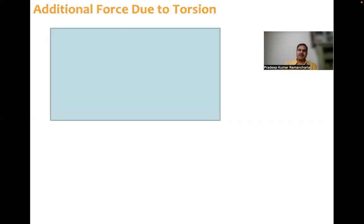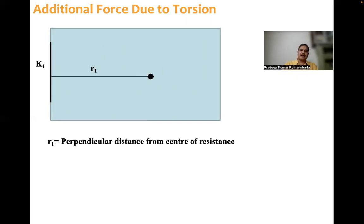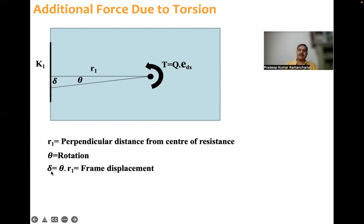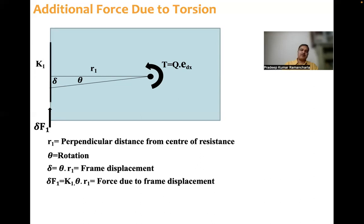Consider the floor plan — take one typical frame with stiffness k1 at a radius r1 from the center of resistance where the torsion acts in the anticlockwise direction. Because of this torsion, the entire floor diaphragm will rotate by an angle theta, which displaces the frame by delta. Delta equals theta multiplied by r1. Using this delta, the force on frame 1 is delta F1 equals k1 multiplied by theta multiplied by r1.